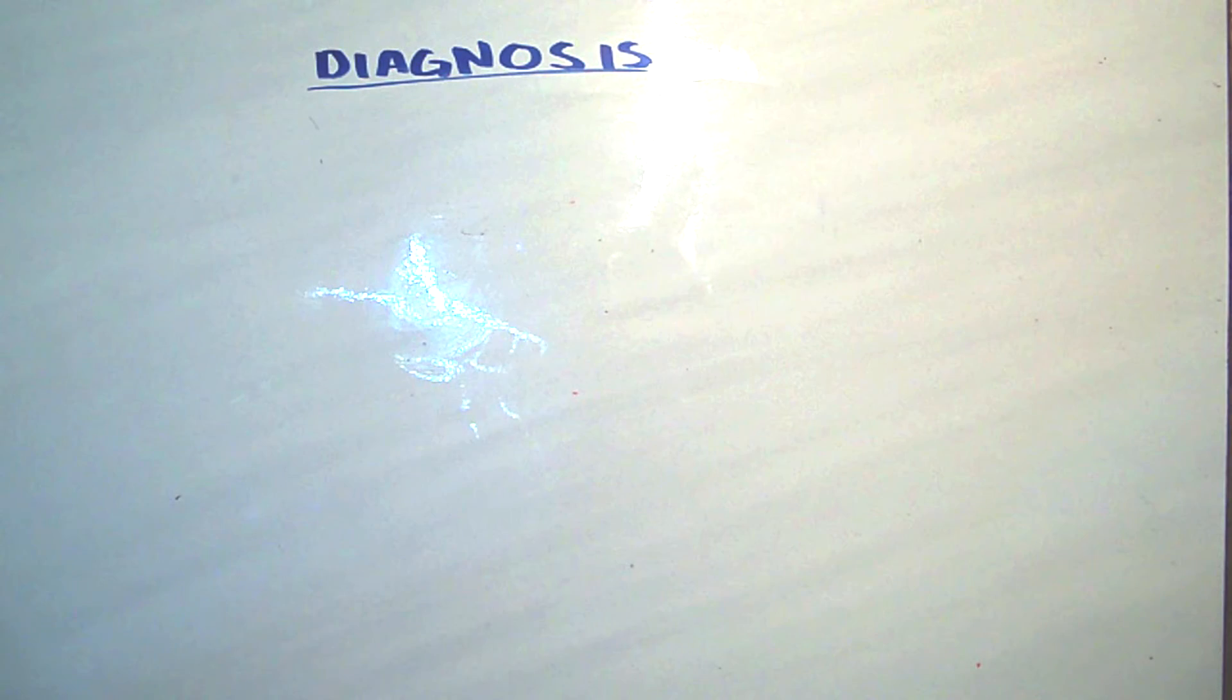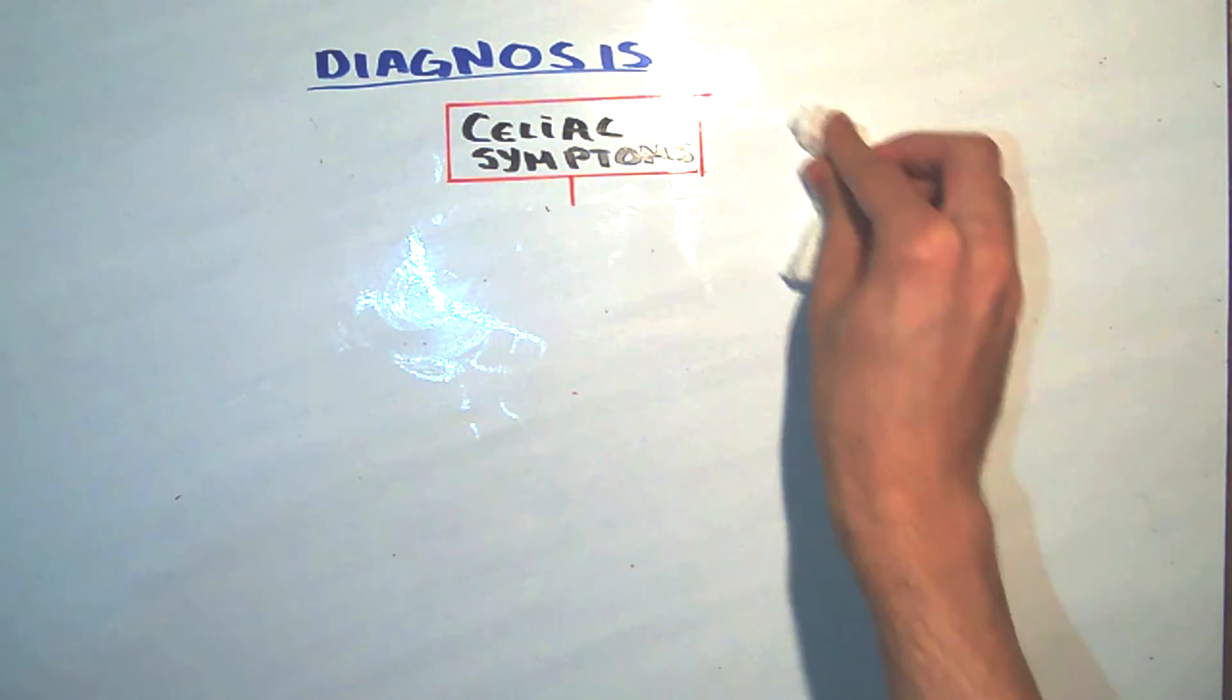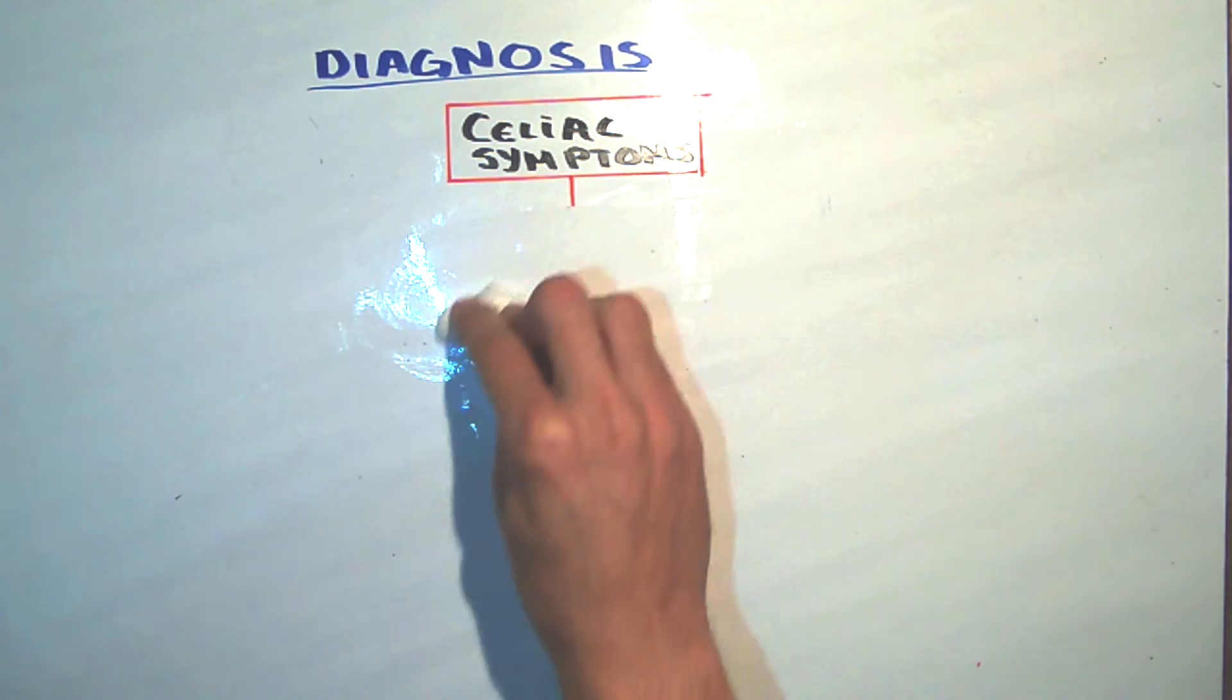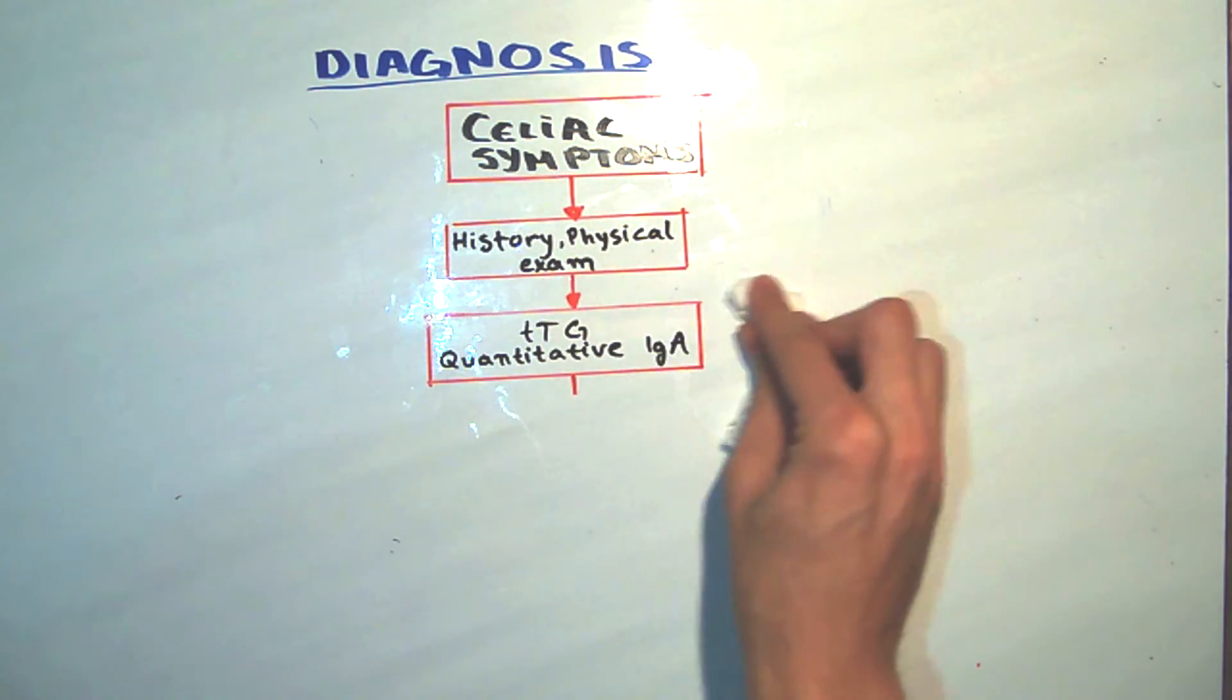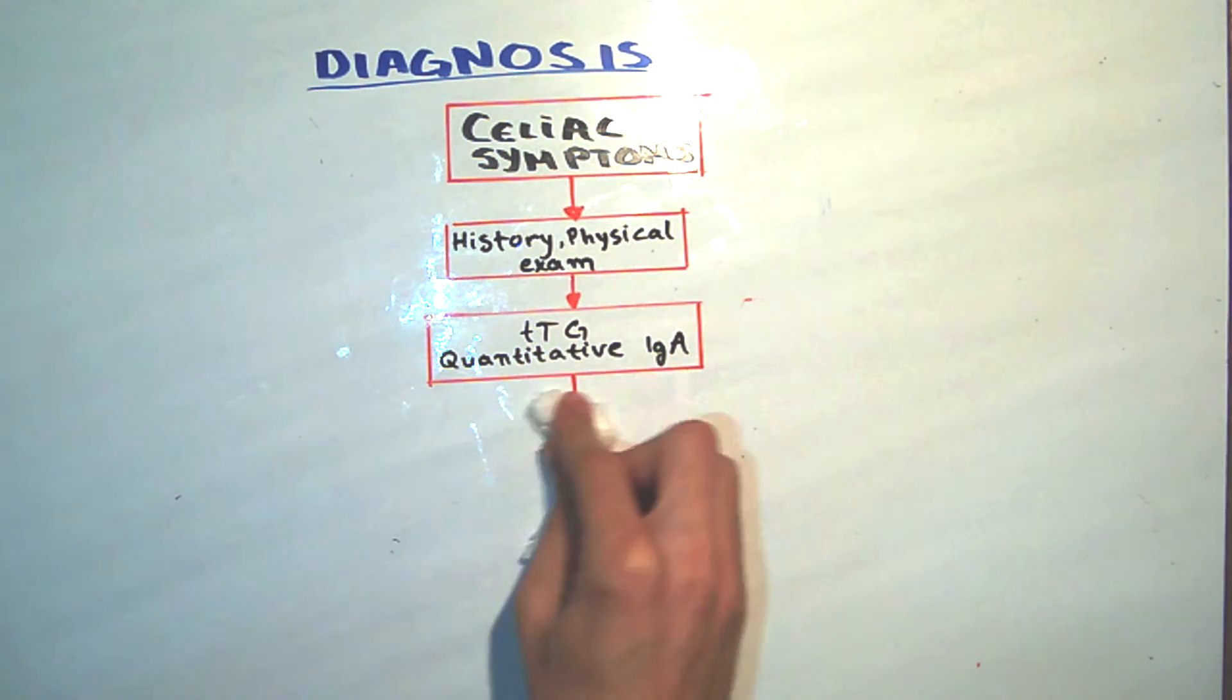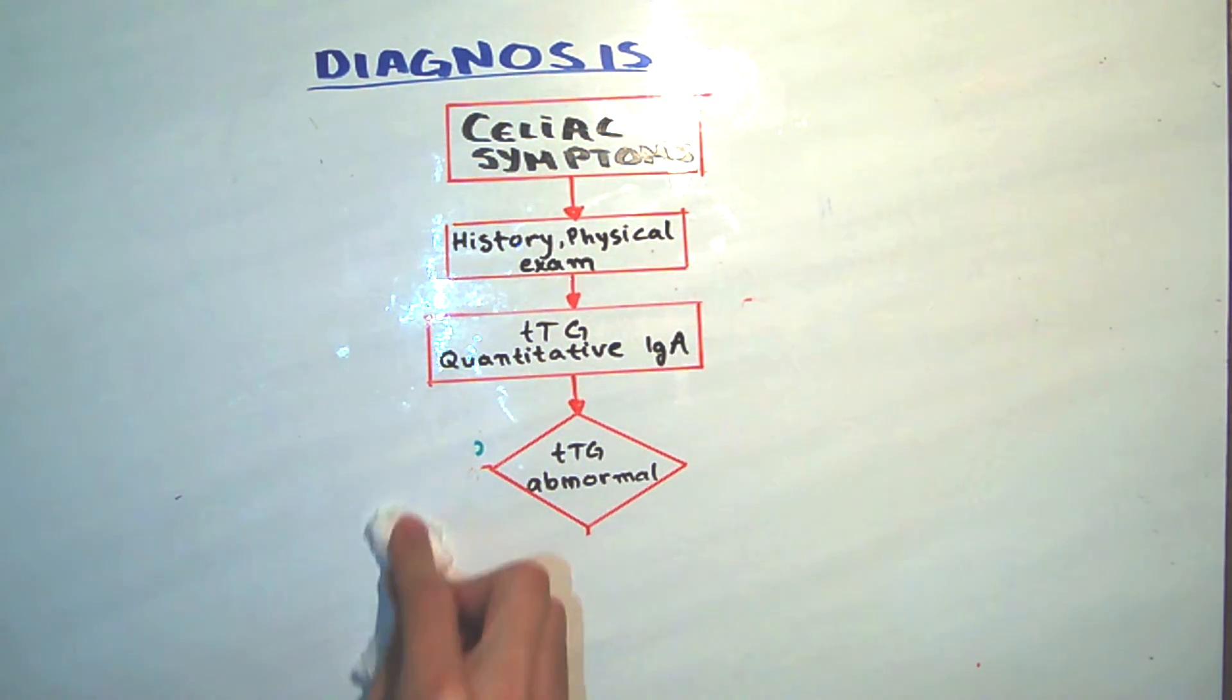To understand more clearly the diagnosis, I will draw an algorithm, which is very useful in helping us to be more sure that we didn't miss anything in our way to the diagnosis. If the patient presents with celiac symptoms, first thing to do is to take a good medical history and a physical examination. Next, we measure the anti-tissue transglutaminase IgA in the blood, and if there is no abnormalities, then probably it's not celiac disease.